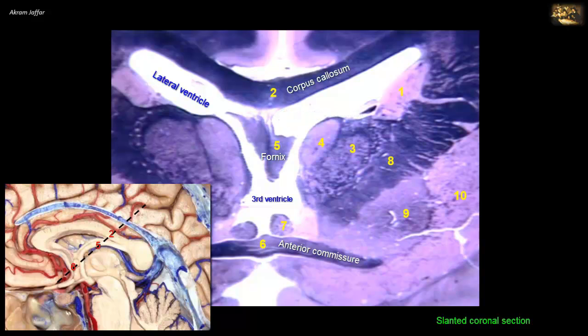The fornix is a fiber bundle in the limbic system, hence it also stains dark blue. The floor of the body of the lateral ventricle includes part of the dorsal surface of the thalamus, where you can see two groups of its nuclei: the anterior group, number 4, and the lateral group, number 3. The body of the caudate nucleus, number 1, forms a ridge along the lateral border of the floor of the body of the lateral ventricle. Lateral to the thalamus is the internal capsule, a massive fiber bundle made up of projection fibers, hence also stained dark blue.